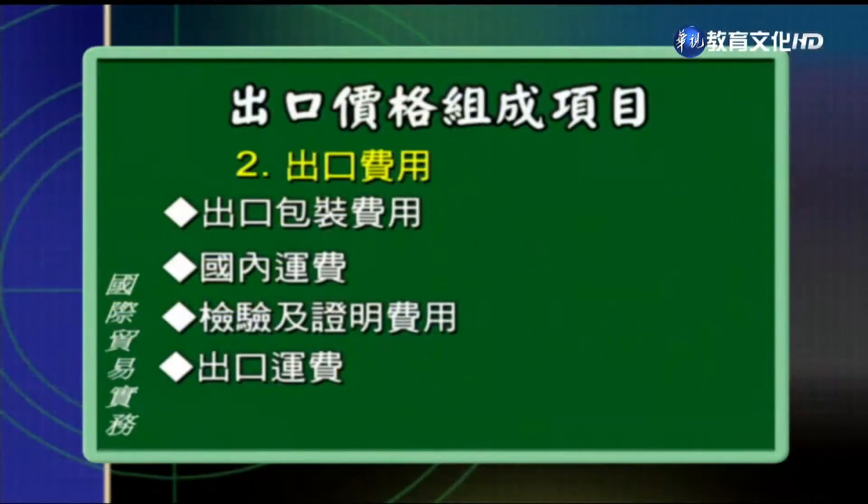如果出口商所报的价格是FOB，那么这笔运费不用记录在报价里面；但是如果所报的费用是CFR、CIF，那我们的价格里面就包含了运费，所以要考虑这个出口运费。第五项是保险费，它是指从出口地到目的地之间的国际运输保险费用。这费用要不要记录在出口价格，也是看交易条件，比如说报的条件是CIF或者是CIP，那么出口价格就必须包含保险费。